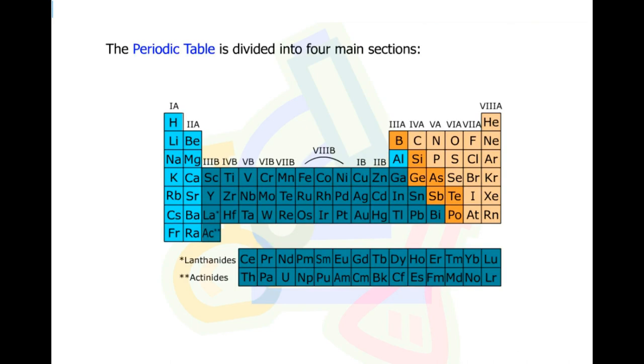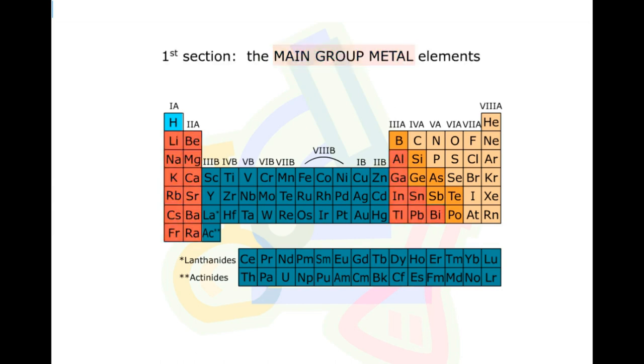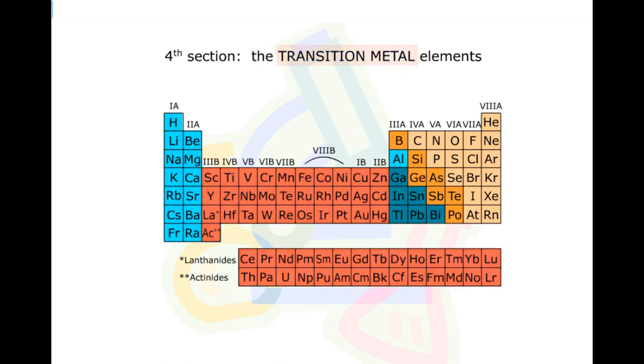The periodic table is divided into four main sections. First section, the main group metal elements. Second section, the non-metal elements. Look here. Third section, the metalloid elements. And fourth section, the transition metal elements.